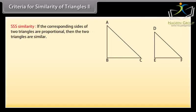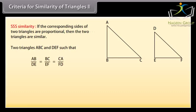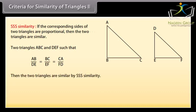Criteria for similarity of triangles — two: SSS similarity. If the corresponding sides of two triangles are proportional, then the two triangles are similar. In triangles ABC and DEF, if AB upon DE equals BC upon EF equals CA upon FD, then the two triangles are similar by SSS similarity.